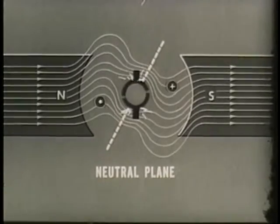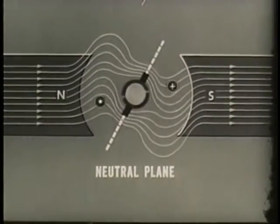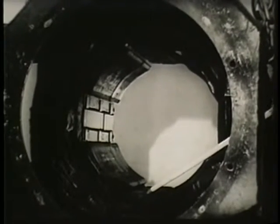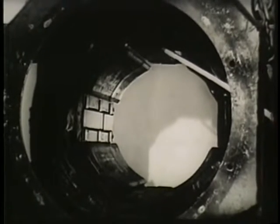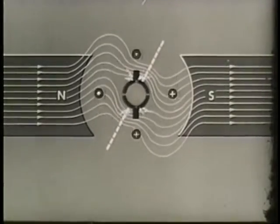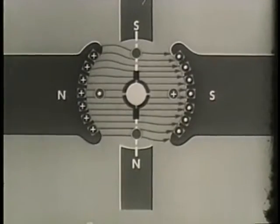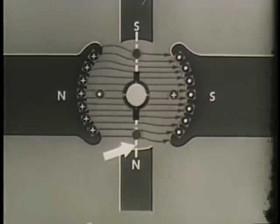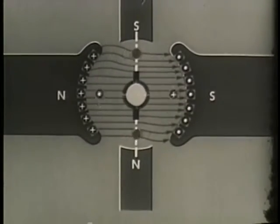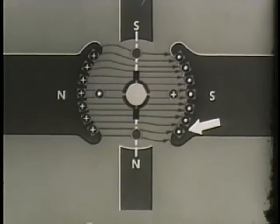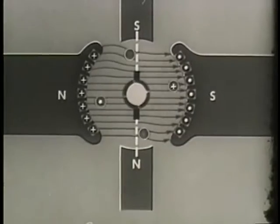There are two ways of maintaining the neutral plane in its correct position and thus avoiding sparking. It may be done by the adjustment of the brush position — the brushes are adjusted to lie in the adjusted neutral plane. The other way is by adding interpoles to the generator field. These interpoles are small magnets placed between the poles of the main field magnets. The interpole fields oppose the fields created by armature reaction. In addition, to further counteract armature reaction, windings called compensating windings are sometimes placed in the main pole faces. The current in these windings is armature current flowing in the opposite direction to the current in the armature conductors.